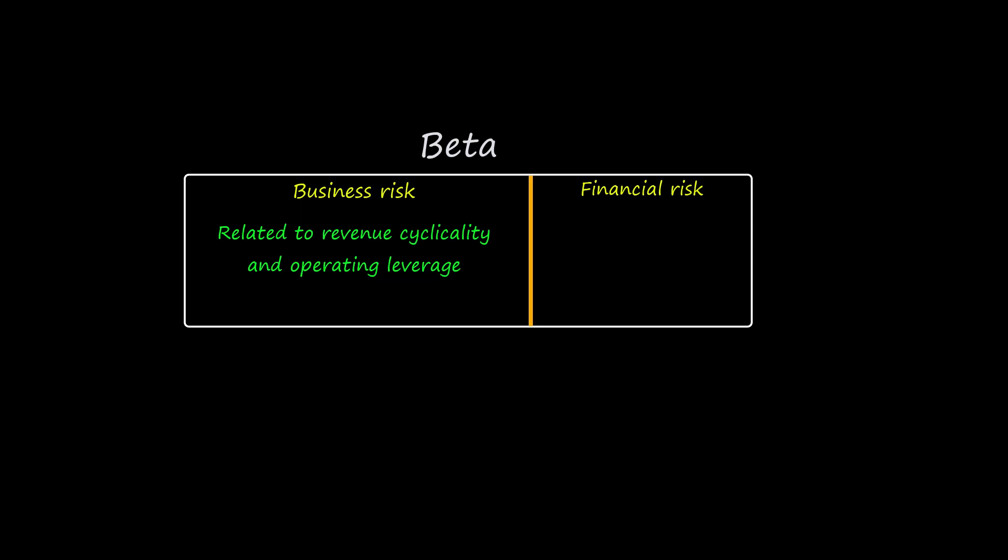Although we do not need to go into great detail for this video, we note in passing that revenue cyclicality is the way in which sales react to changes in the business cycle, and operating leverage is the relationship between variable and fixed costs.